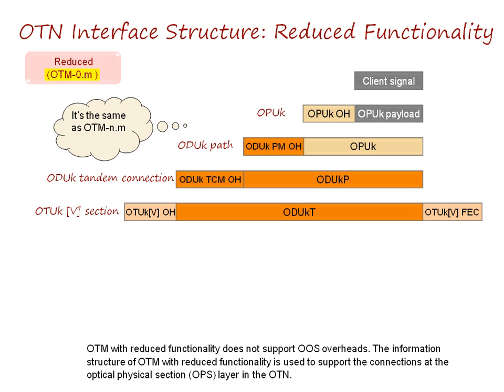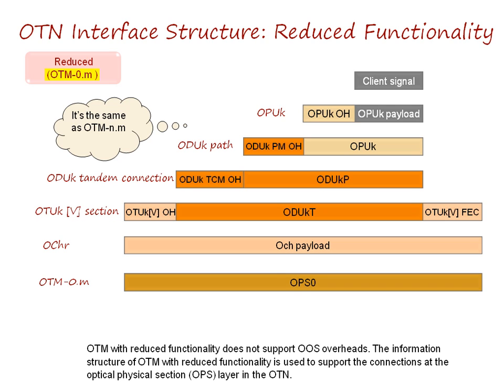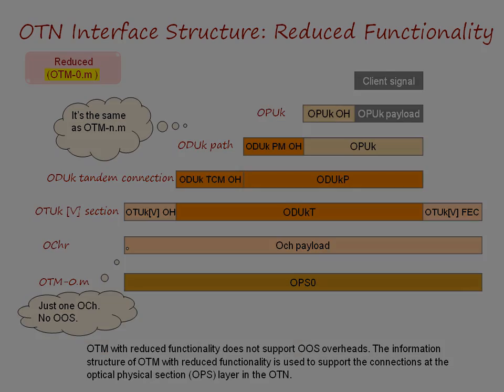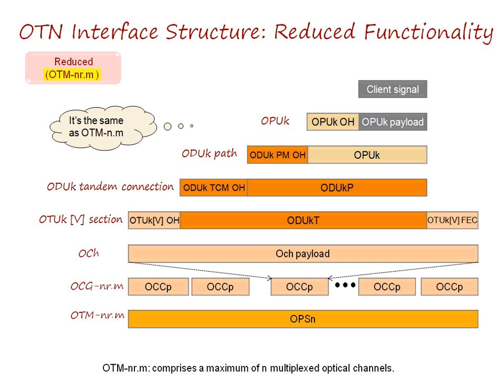OTM with reduced functionality does not support OOS overheads. The information structure of OTM with reduced functionality is used to support the connections at the optical-physical section layer in the OTM. OTM NRM comprises a maximum of N multiplexed optical channels.